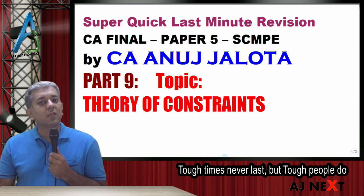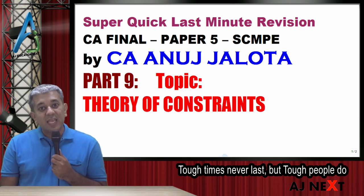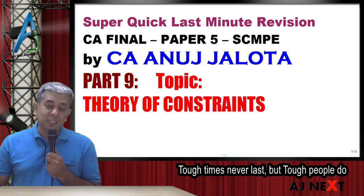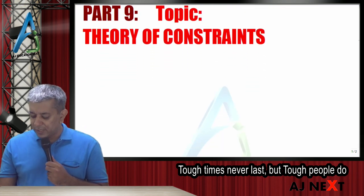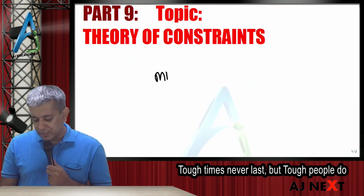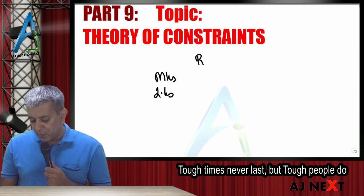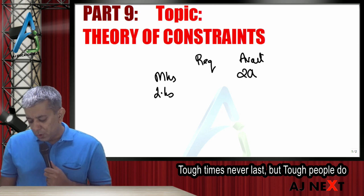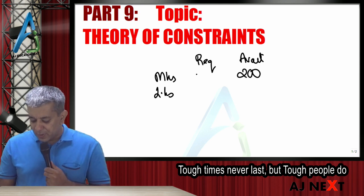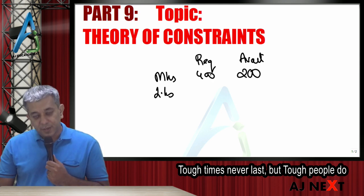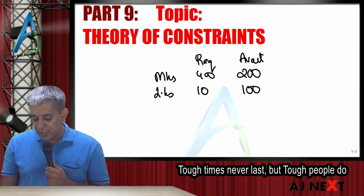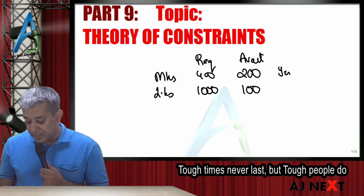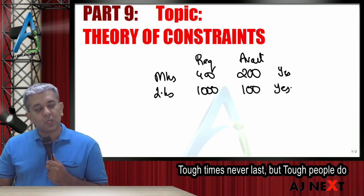Theory of Constraints mainly applies where there is a limiting factor. What is the limiting factor? Where the requirement is greater than availability. Suppose, in this particular case, you have machine hours and labor hours. Requirements here, availability here. So, 200 hours you have, you need 400. 100 hours you have, you need 1000. Is machine hours in short supply? Yes. Is labor hours in short supply? Yes.